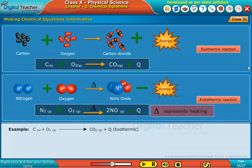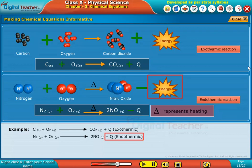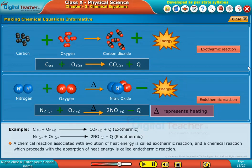The examples of these reactions are shown on screen. A chemical reaction associated with evolution of heat energy is called exothermic reaction, and a chemical reaction which proceeds with the absorption of heat energy is called endothermic reaction.